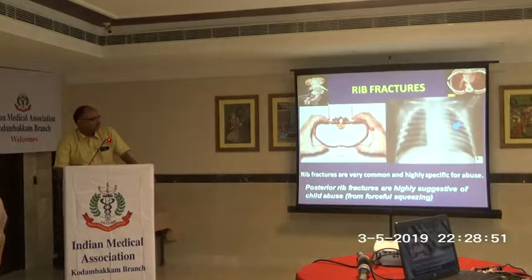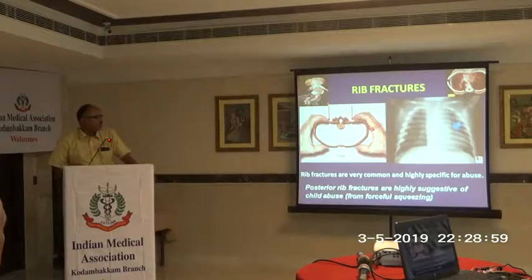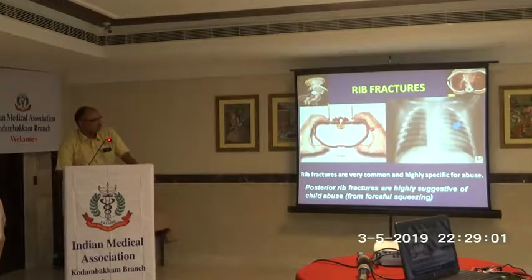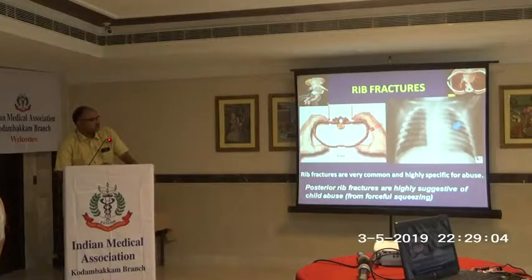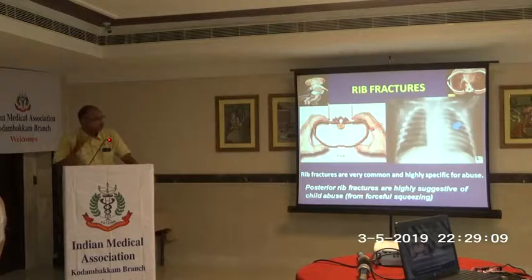The rib fracture — classically it will be on the posterior aspect and the anterior aspect, causing this fracture pattern. You should have a suspicion: when there are multiple fractures or one or two fractures, you will have a suspicion this could be a battered baby child.